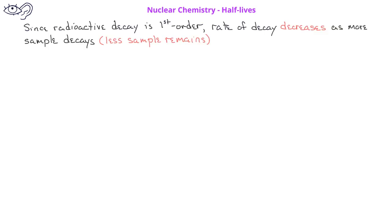Since radioactive decay is a first-order process, the rate of decay slows or decreases as more of the sample decays.